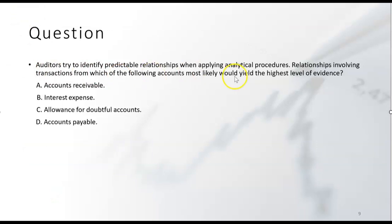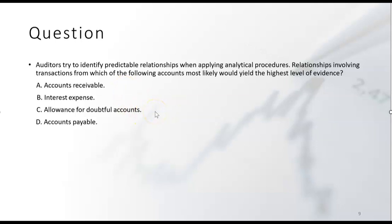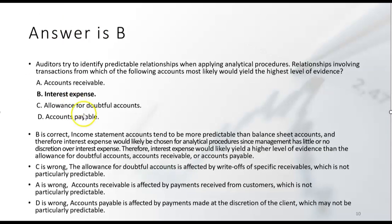Next question: Auditors try to identify predictable relationships when applying analytical procedures. Transactions from which account would most likely yield the highest level of evidence? A — accounts receivable; B — interest expense; C — allowance for doubtful accounts; D — accounts payable. The answer is B. Income statement accounts tend to be more predictable than balance sheet accounts. Interest expense is an income statement account, and management has little or no discretion over it, so it would likely yield a higher level of evidence than these balance sheet accounts.